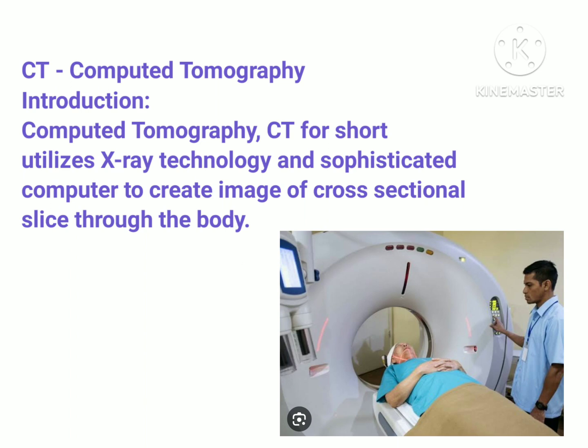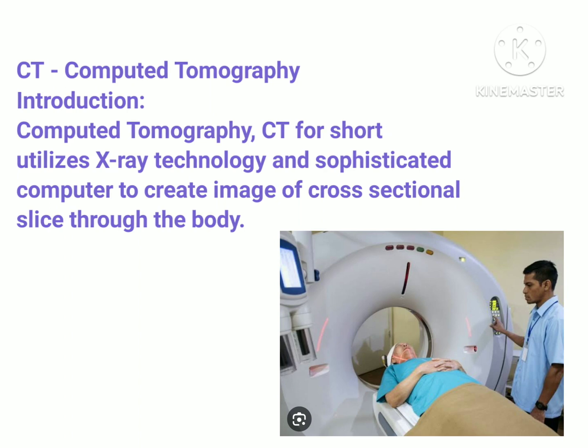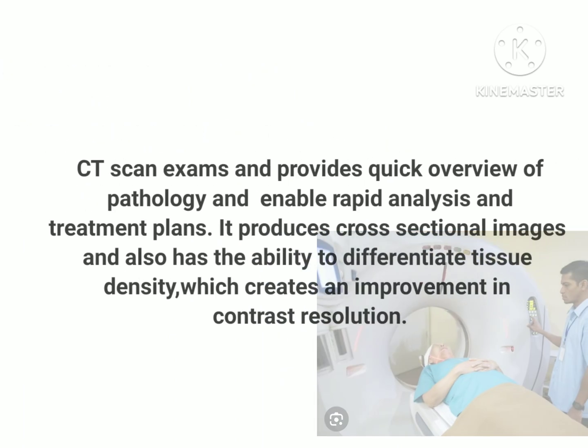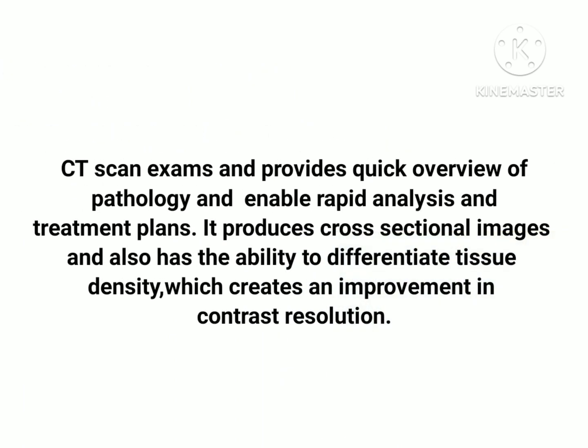X-ray machines sometimes fail in diagnosing soft tissues, muscle damage, and other body organs, but this is possible to diagnose with the help of CT scan. Also, x-ray machines provide images in 2D form, while CT scan images are in 3D form. CT scan examines a quick overview of the pathology and enables rapid analysis and treatment plans for the patient.